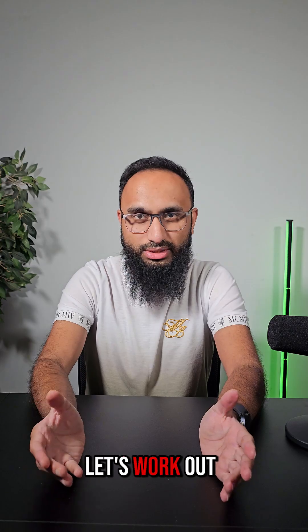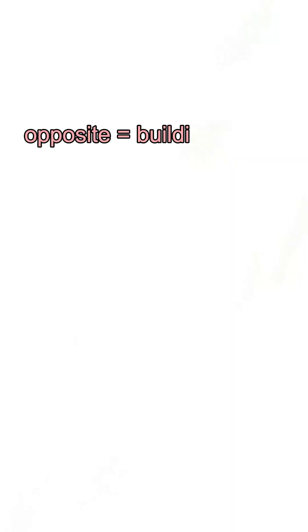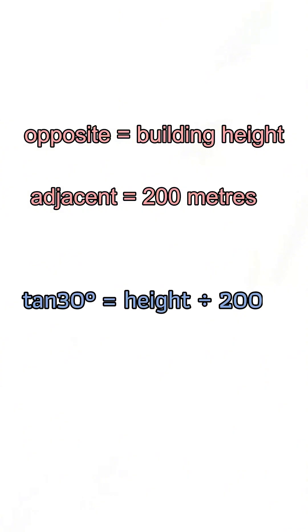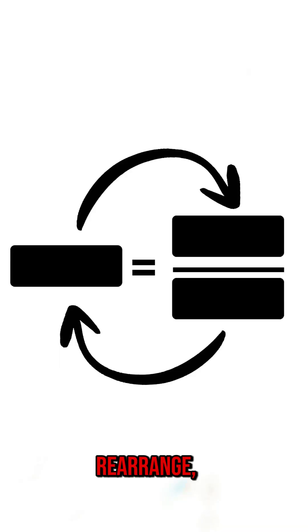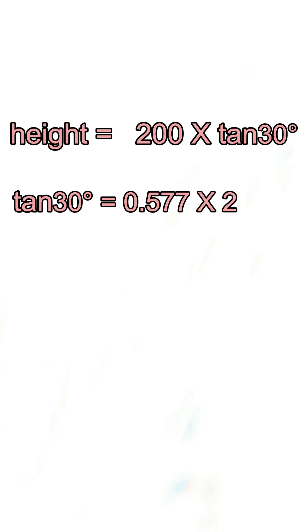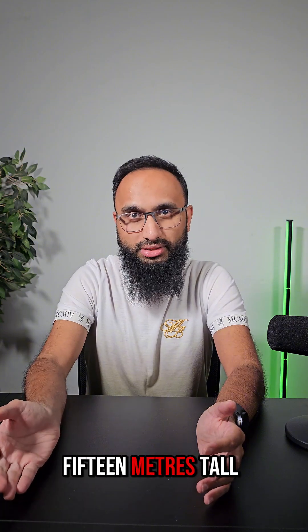Firstly, let's work out the opposite, which is the building height, and the adjacent, which is 200 meters. Tan of 30 degrees equals height divided by 200. So we rearrange: height equals 200 times tan of 30 degrees. Tan of 30 degrees is 0.577, and multiplying by 200 gives 115.4 meters. So the building is about 115 meters tall.